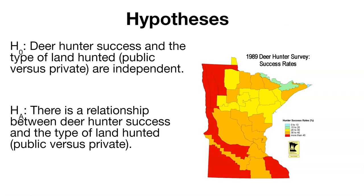Here's how we might list the hypotheses for this chi-square test. Our null hypothesis is that deer hunter's success and the type of land hunted, public versus private, are independent.